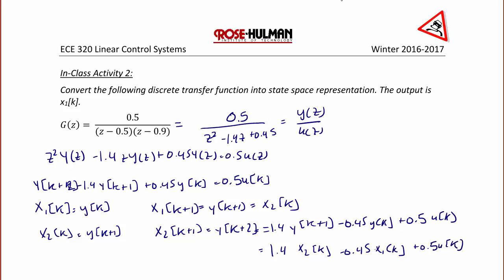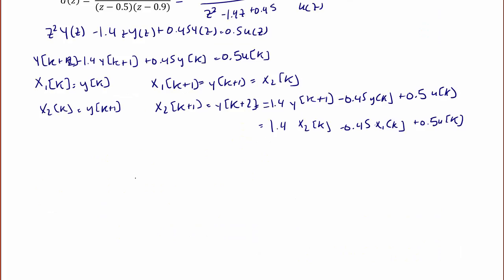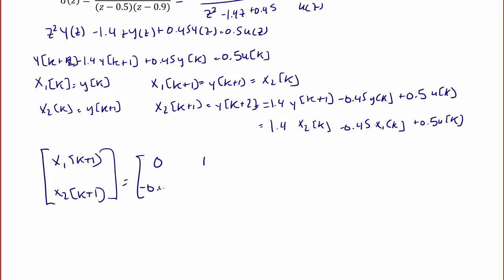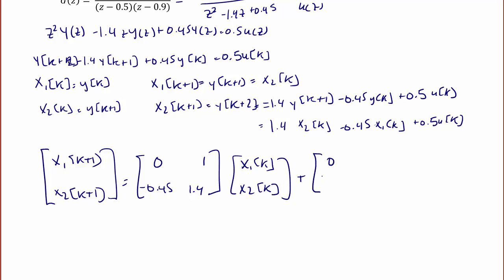Finally, we write the answer in matrix form. The 2-by-1 state vector [x1(k+1); x2(k+1)] equals the 2-by-2 G matrix [0, 1; negative 0.45, 1.4] times [x1(k); x2(k)], plus the 2-by-1 H matrix [0; 0.5] times u(k).